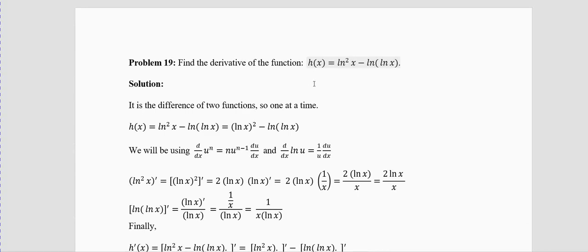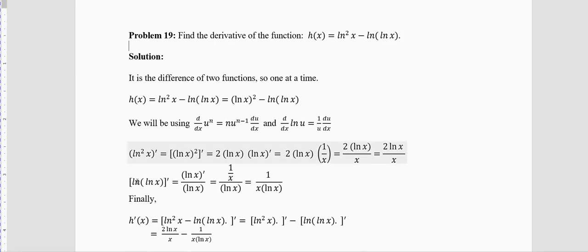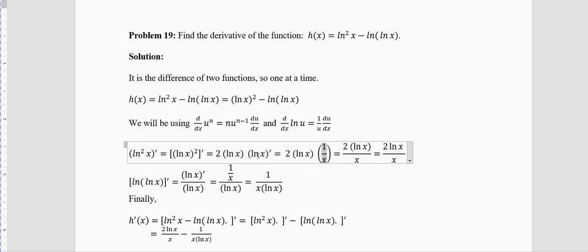Problem 19: Find the derivative of h(x) = ln²x − ln(lnx). There are two parts — do them one at a time. Derivative of ln²x = derivative of (lnx)²: apply power rule — 2·lnx · (1/x) = 2lnx/x. Derivative of ln(lnx): let u = lnx, so derivative of ln(u) is u′/u = (1/x)/lnx = 1/(x·lnx). So h′(x) = 2lnx/x − 1/(x·lnx).